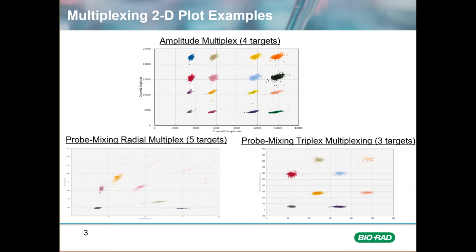Here are three examples of ddPCR multiplexing strategies and how the clusters might appear on the 2D plot. At the top is an amplitude multiplex with four assays. A probe mixing triplex on the bottom right, and on the bottom left is a probe mixing radial multiplex showing the fiveplex. More clusters can be added for further multiplexing.